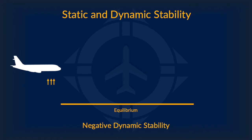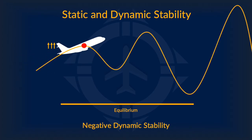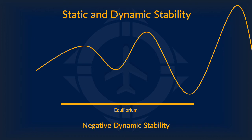Lastly, we have negative dynamic stability. As one can see, the airplane's fluctuations actually increase in magnitude over time. This is very undesirable for most airplanes as it could be difficult to regain control and could quickly lead to a stall and a crash.